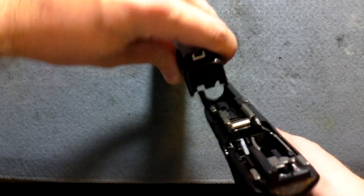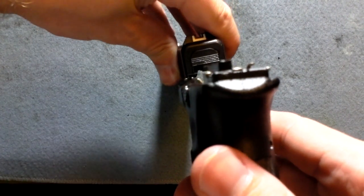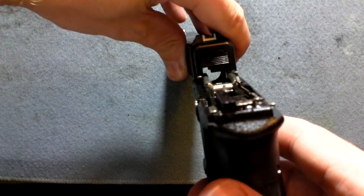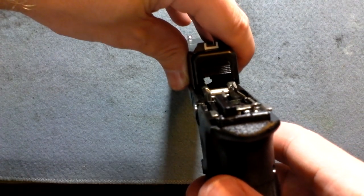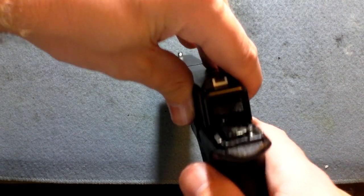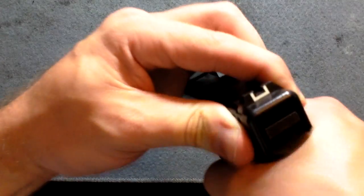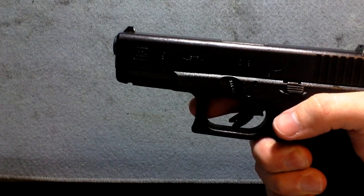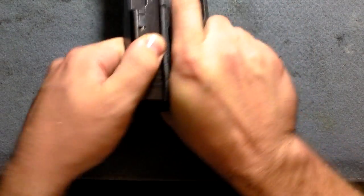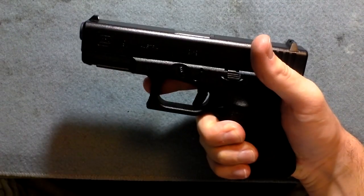Now you're going to take the bottom of the gun, and if you can see that there, you're going to line up your rails, and slide it back. Like such. So that is how you clean your Glock 19.